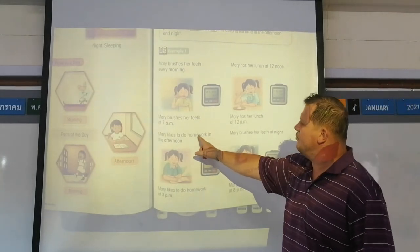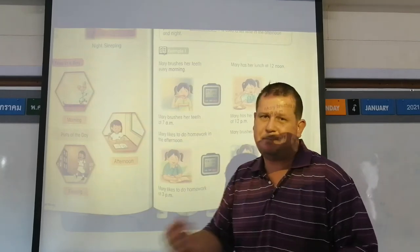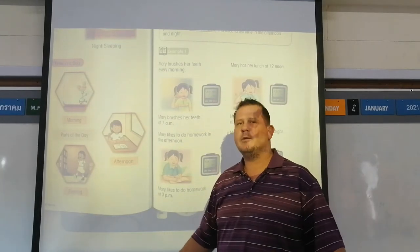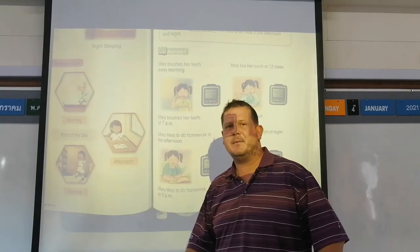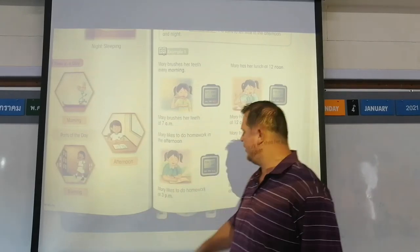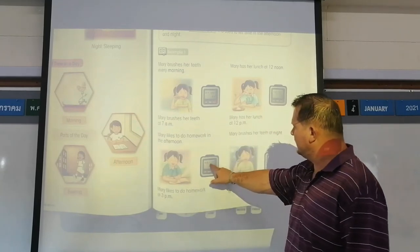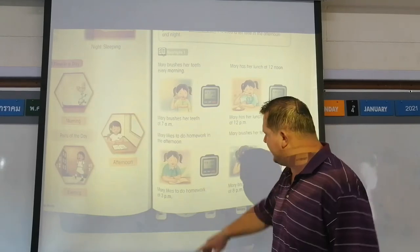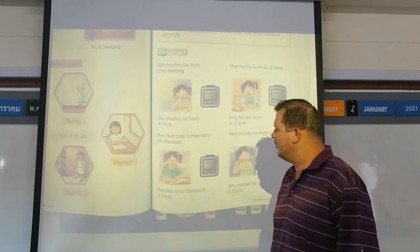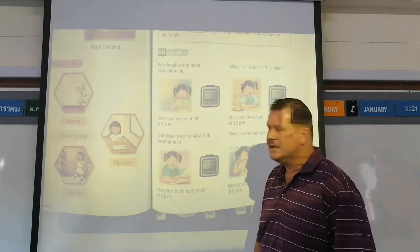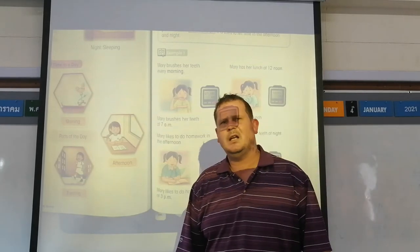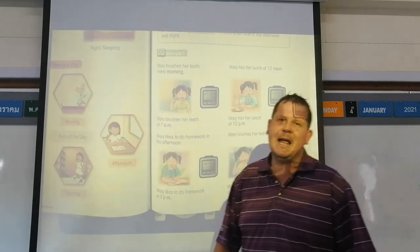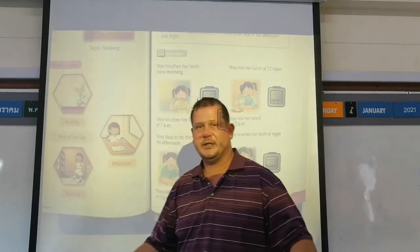Mary likes to do homework in the afternoon. In the afternoon you know it's PM, because AM is morning — so it has to be PM. The clock shows 15:00, and Mary likes to do homework at 3 PM. You don't have to say 15:00 — just say 3 PM, and I know it's 3 o'clock in the afternoon.